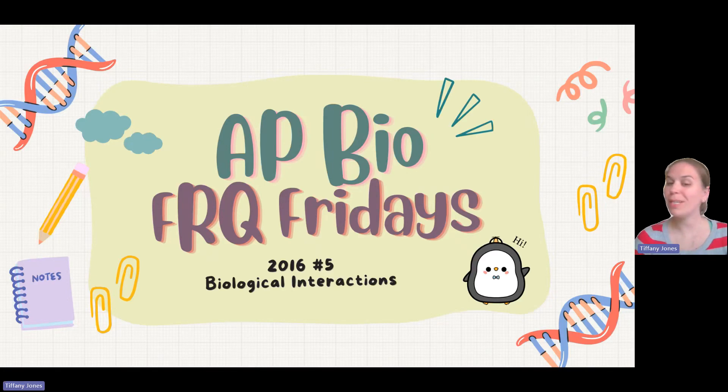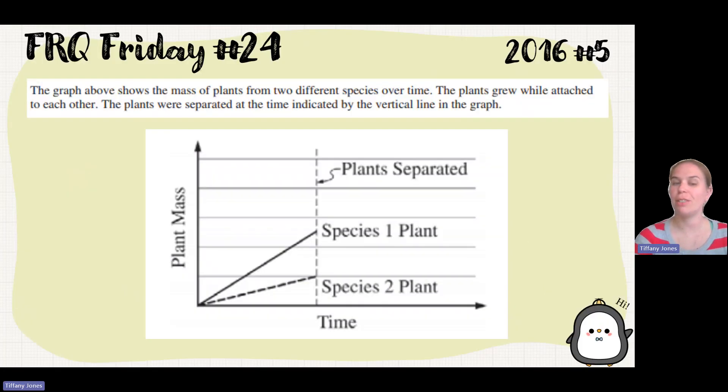What's up, Baby Biopain. Today we're doing 2016 number 5 on Biological Interactions. The graph below shows the mass of plants of two different species over time. The plants grew while attached to each other. The plants were separated at the time indicated by the vertical line in the graph. So here they were grown together, and at this point they were separated.